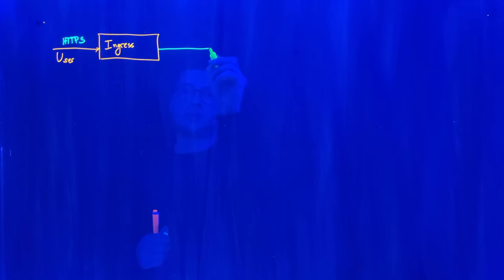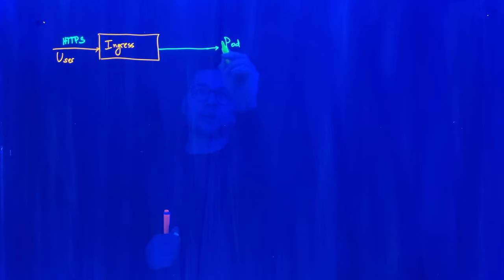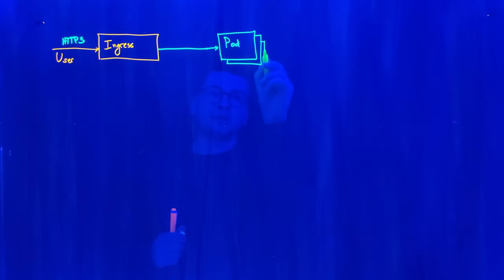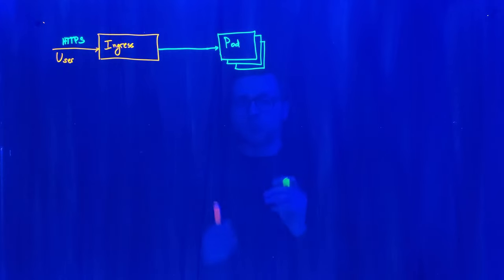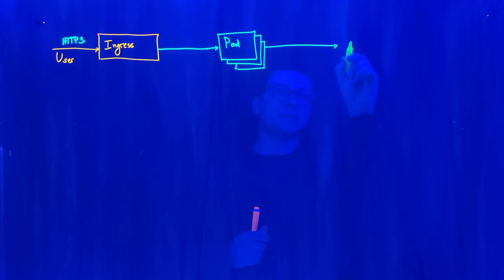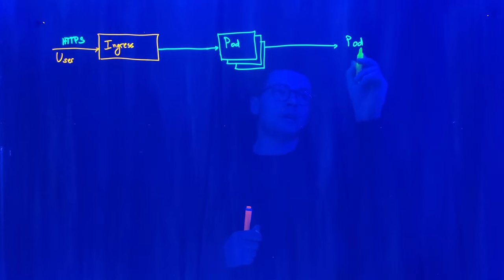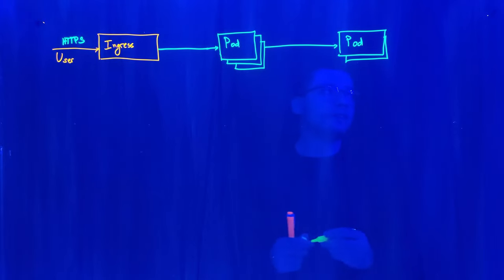Behind the ingress we would have some services that we are exposing, and those services will be exposed inside the pods. We might have one or multiple pods — for example, a pod for the frontend application with multiple replicas. Those pods can communicate with other pods inside the cluster, such as backend pods, forming a second set of pods in the deployment.